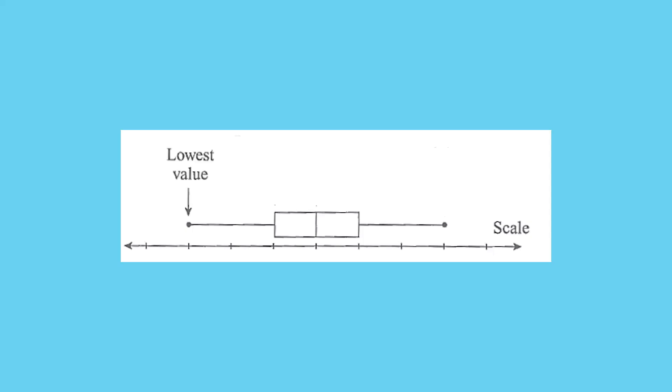If we look, we start off with our lowest value, where we start the little whisker. We put in our lower quartile, that's the start of the little box.